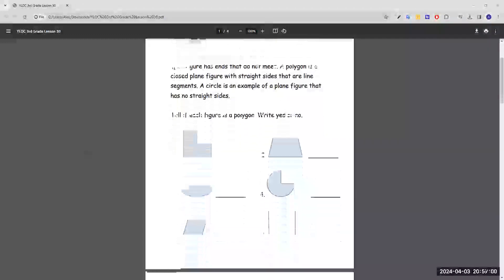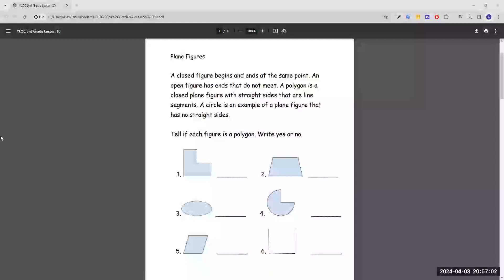So number one, we see that it is closed and it has straight sides. So number one is a polygon.